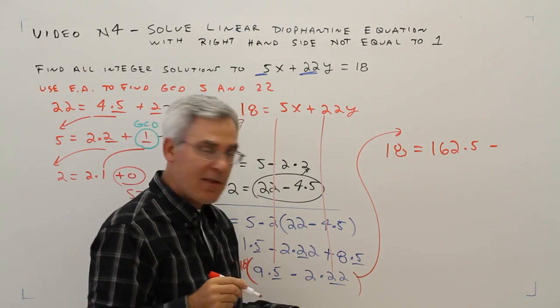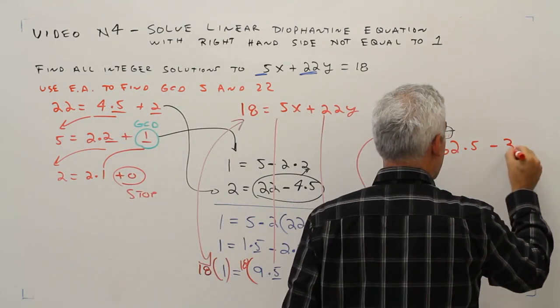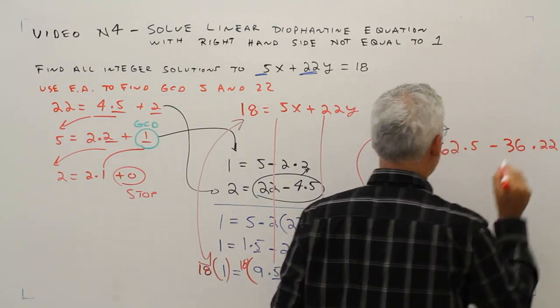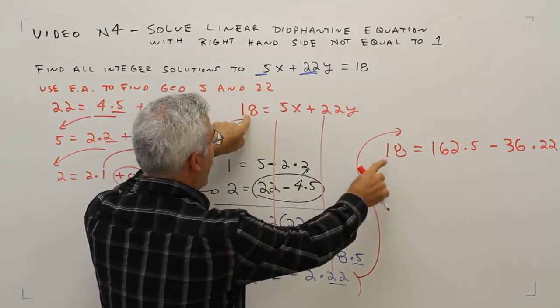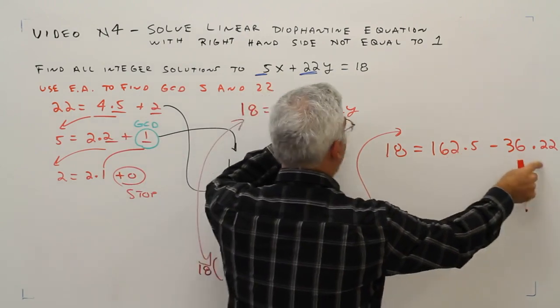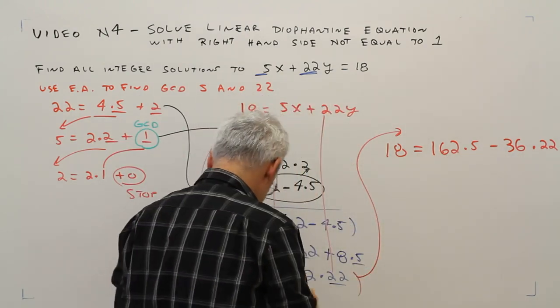Minus 18 times 2, that's 36. And now I've got the 18s, I've got the 5s, I've got the 22s. I'm good to go.